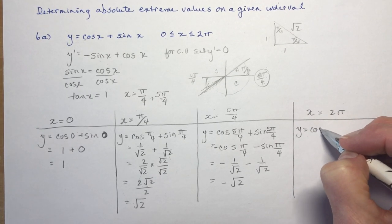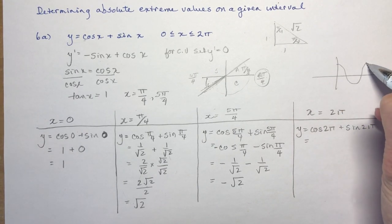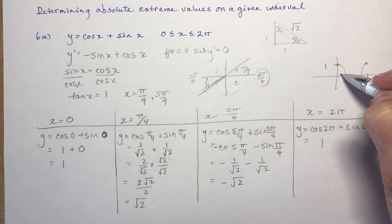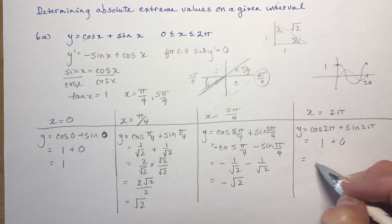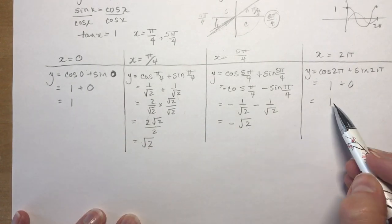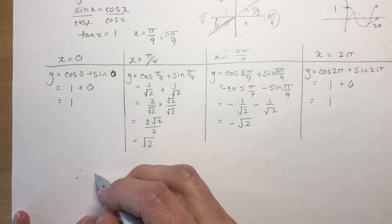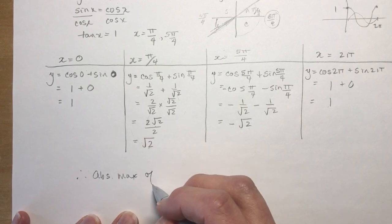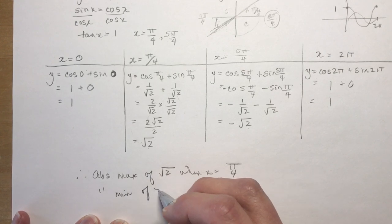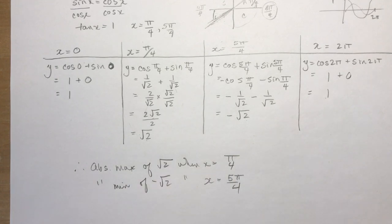Finally, x equals 2π: y equals cos(2π) plus sin(2π). The cos of 2π is 1 and sin of 2π is 0, so I get 1. Now comparing all values: √2 is bigger than 1, and minus √2 is the lowest. So the absolute maximum is √2 when x equals π over 4, and the absolute minimum is minus √2 when x equals 5π over 4.